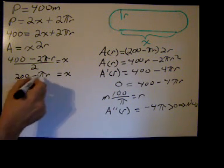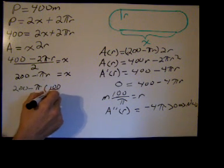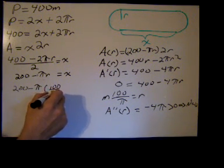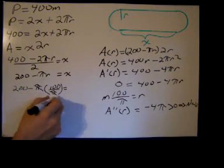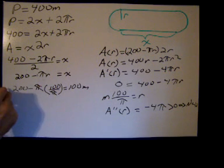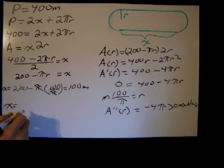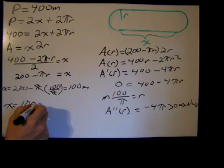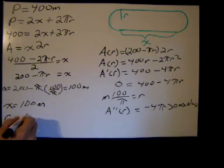Anyway so now back to find a value for x. So we get 200, we're just substituting in for r, minus pi times 100 over pi equals, the pis go away, we get 100 meters. So in order to maximize that rectangle, the value of x that will maximize it is 100 meters, the value of r that will maximize it is 100 over pi meters.